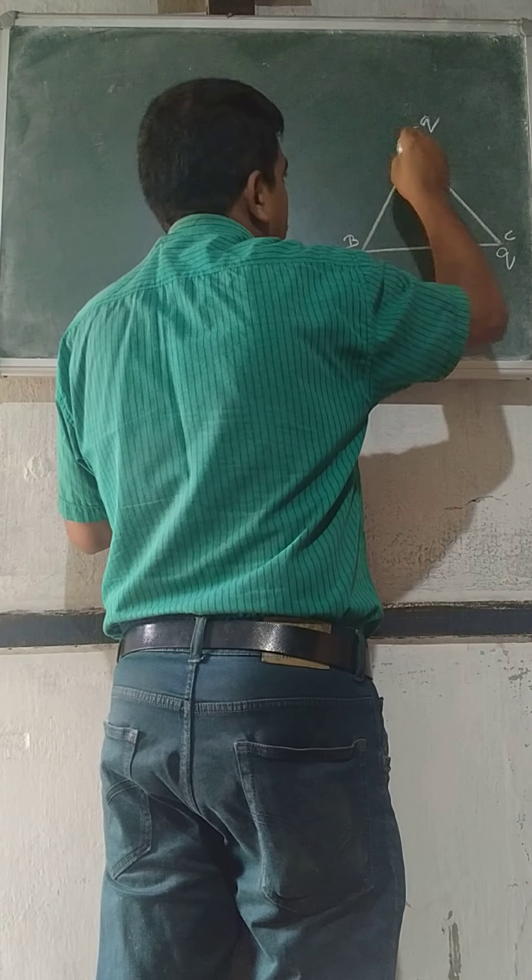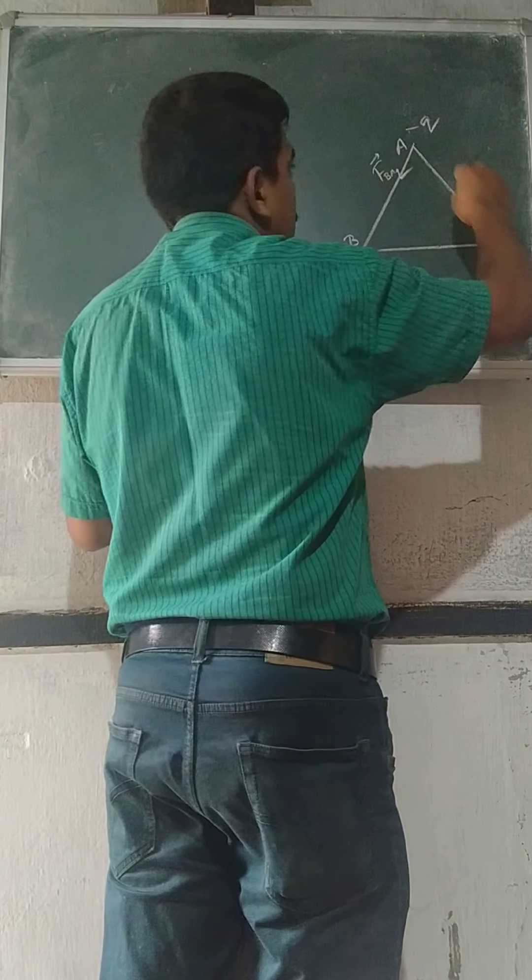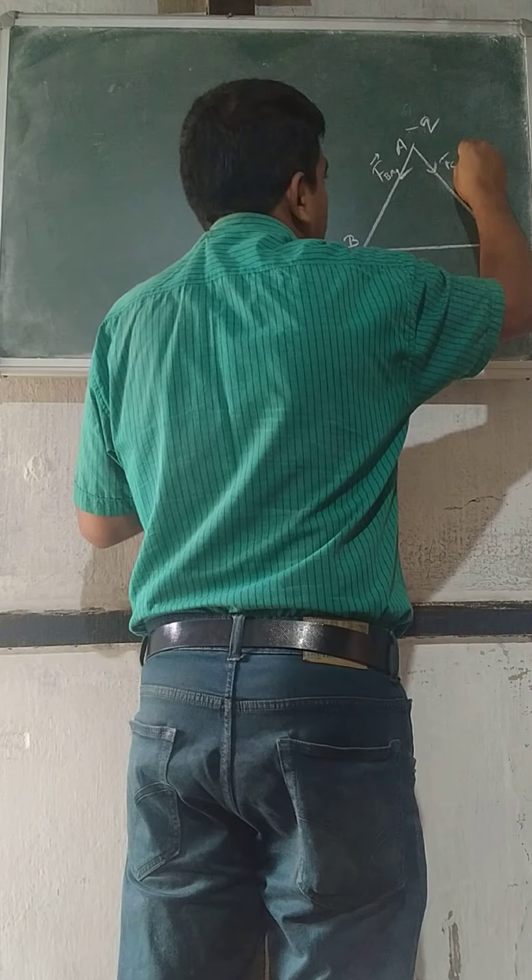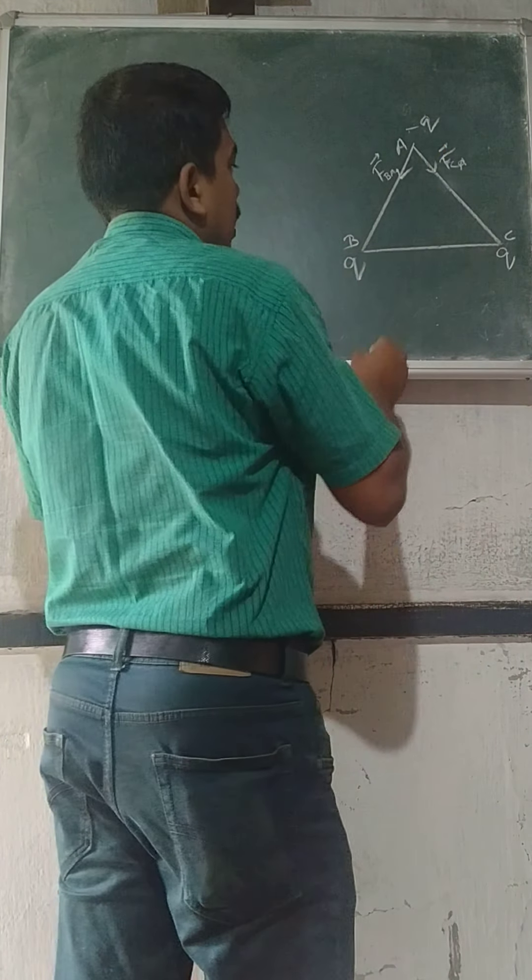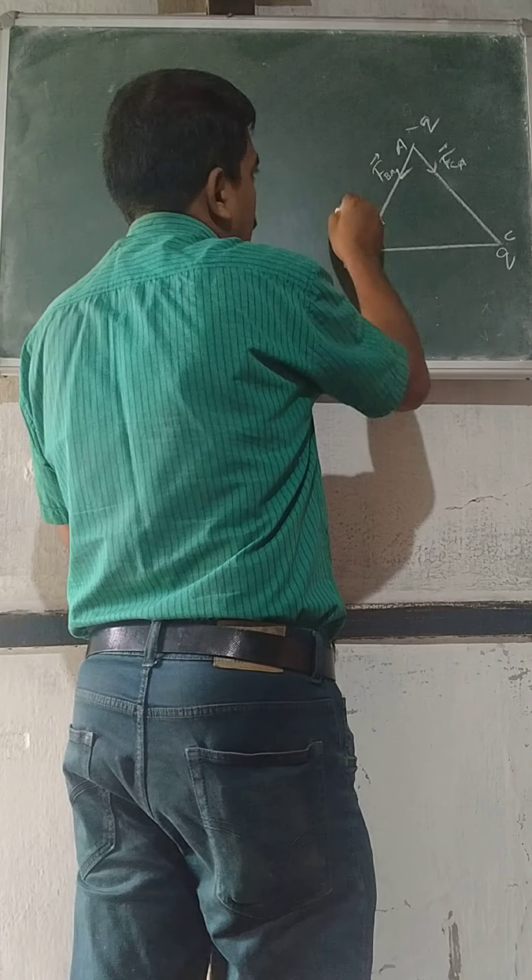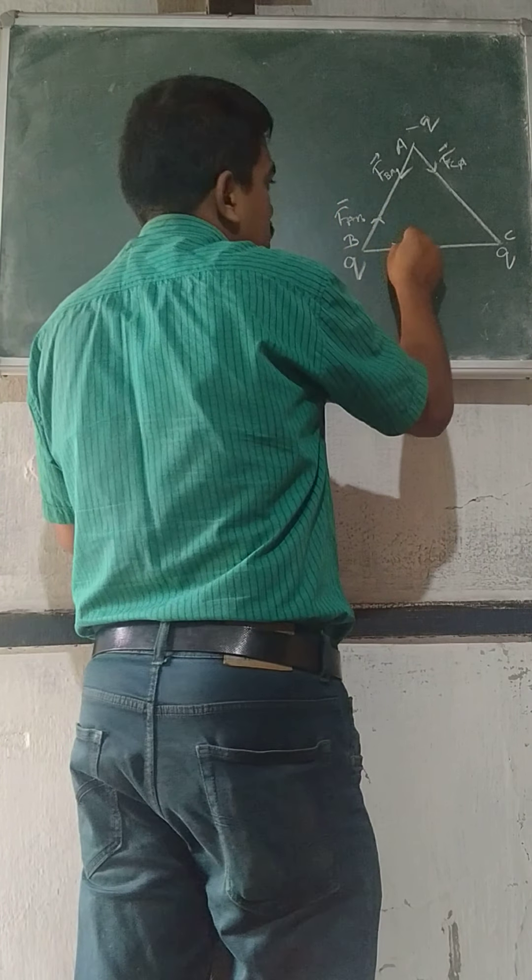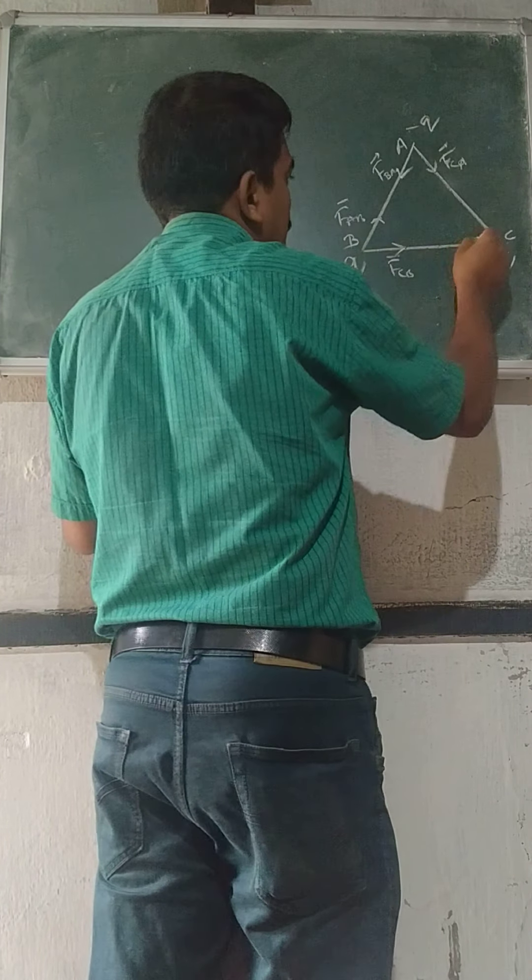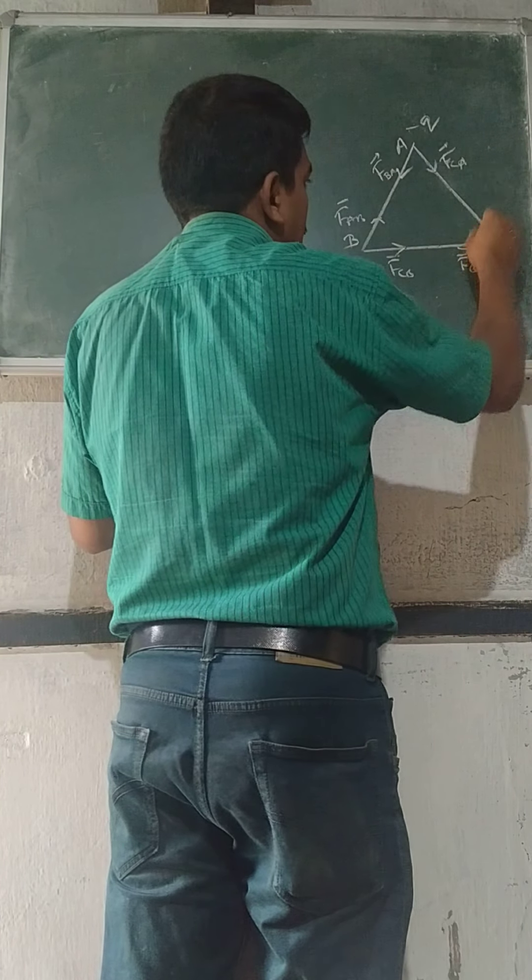First thing, positive and negative will attract each other, so this way it will be FBA. This way will be FCA. This way will be FAB. This will be FCB. This will be FBC.